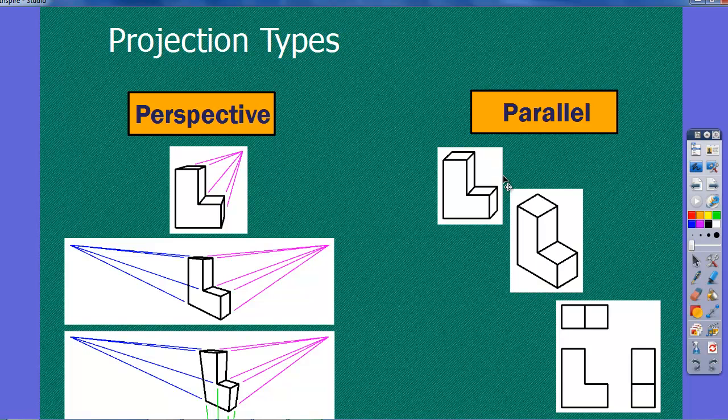In parallel though, we have these three. This one is called an oblique, where now we're looking at the front straight on and it's going back at an angle to give us our depth. And this is a cabinet oblique where we have half the length of the line. So if it was actually the true, the full true length,